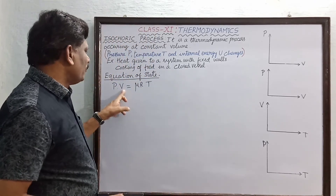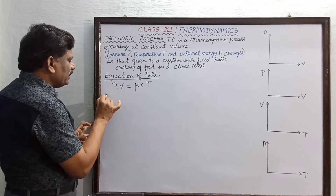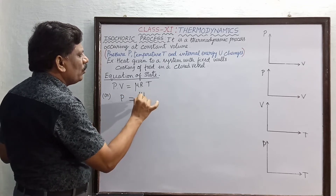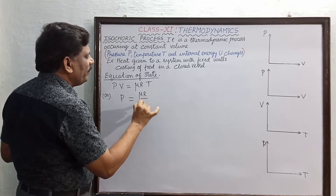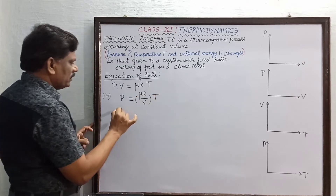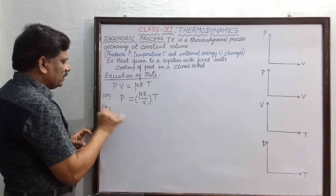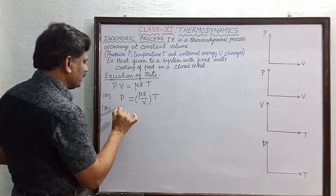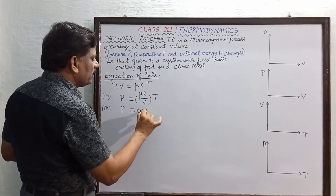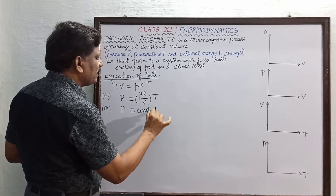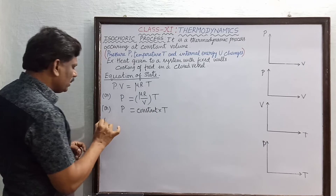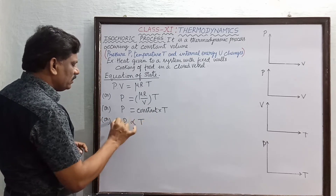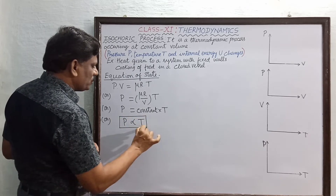Since volume V is kept constant, we can write P = (μR/V) × T. Here μ, R, and V are all constants, so P = constant × T, or P is proportional to T. The pressure is proportional to the absolute temperature.